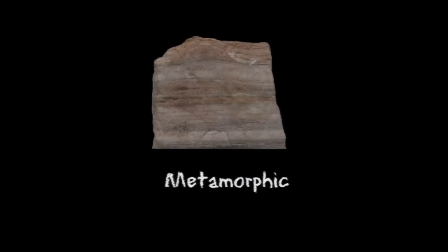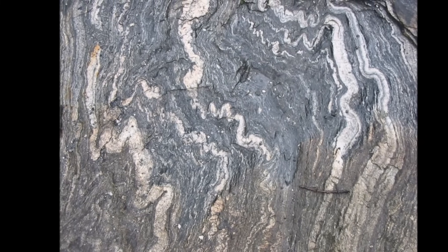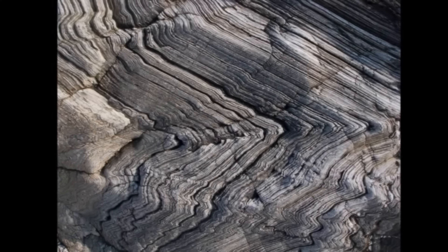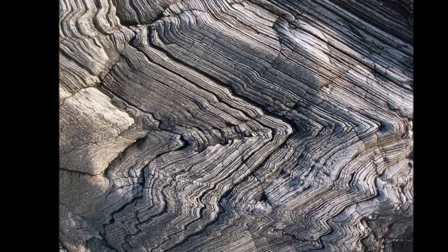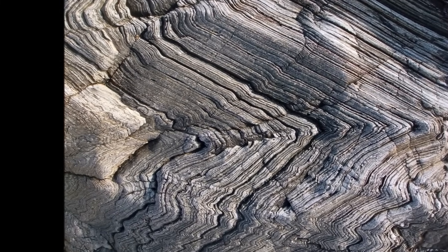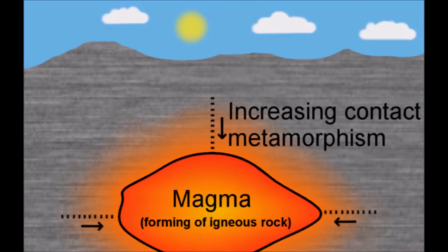The third type of rock is metamorphic rock. The word metamorph means to change form, and metamorphic rock is rock that has been changed by extreme heat and pressure. Sedimentary rock, igneous rock, or even other metamorphic rocks can be changed by heat and pressure into new kinds of rock. Metamorphic rocks can be formed by being deep under the Earth where pressure and temperatures are high, or when rock near the surface is heated up by the movement of tectonic plates or magma.